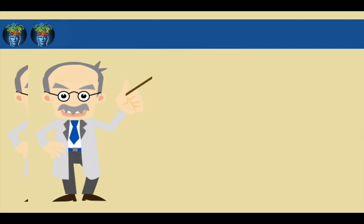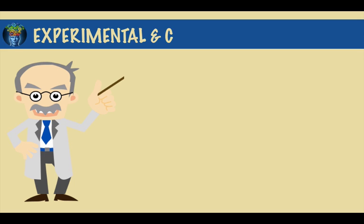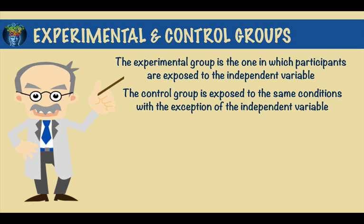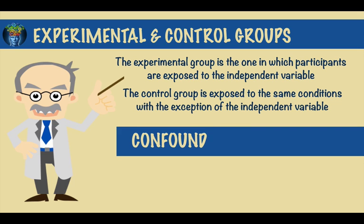In an experiment there are typically two groups: the experimental group and the control group. The experimental group is the one in which participants are exposed to the independent variable. The control group is exposed to the same conditions with the exception of the independent variable, allowing the experimenter to compare the two groups and establish the effects of the independent variable.